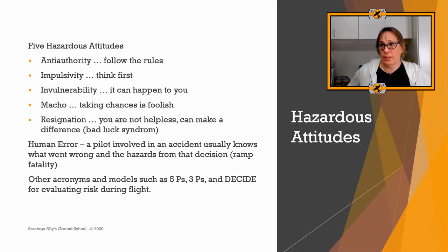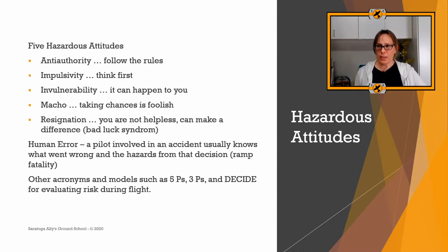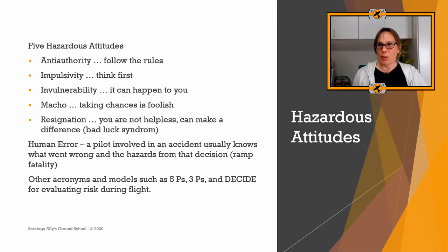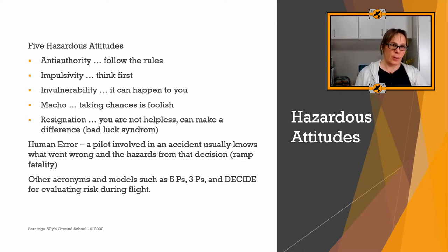Human error: a pilot involved in an accident usually knows what went wrong and the hazards from that decision. The ramp fatality is a perfect example — he knew he should have shut the engines off and he didn't. From my experience, PAVE and the hazardous attitudes are the ones that come up most often on the test. But you will see the five P's — the plane, the plan, the pilot, the passengers, and the programming — which you can evaluate at different phases of flight.